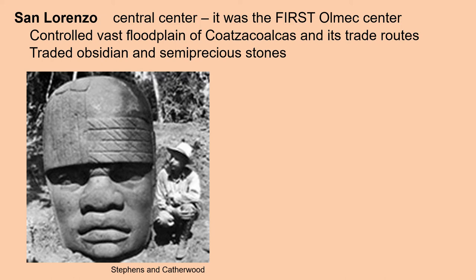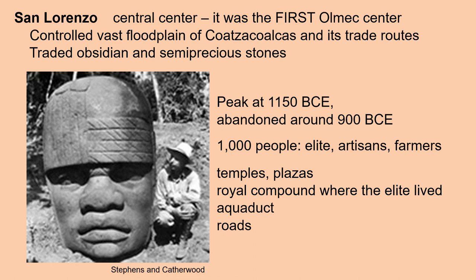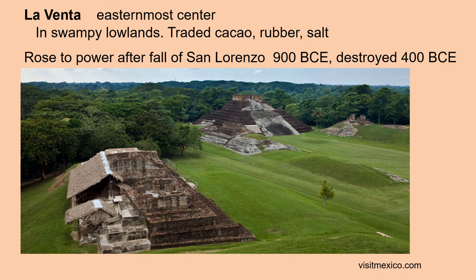San Lorenzo was the first Olmec center, located more or less in the center. It controlled the vast floodplain of Coatzacoalcos and its trade routes, trading obsidian and semi-precious stones. This first Olmec center peaked at 1150 before the Common Era and was abandoned around 900 before the Common Era. We think about 1,000 people lived here, including the elite, artisans, and farmers. This center had temples, plazas, a royal compound, an aqueduct, and roads.